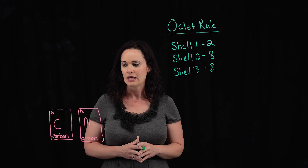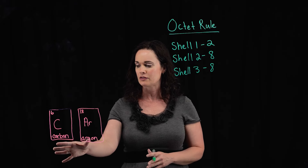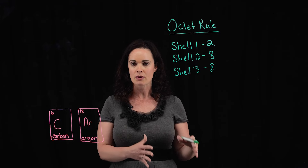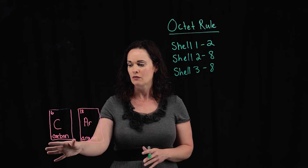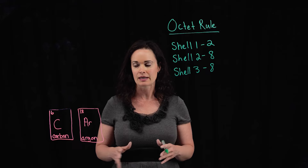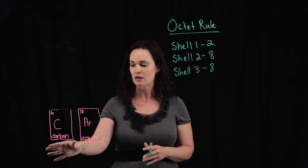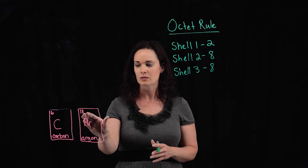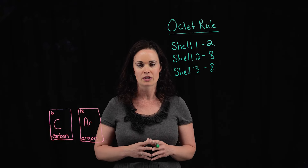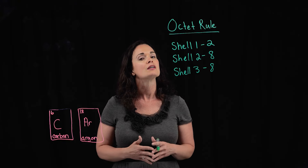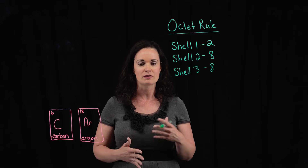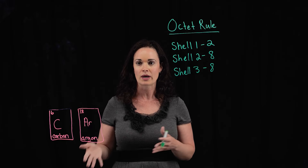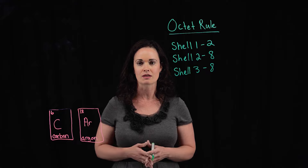Go ahead and pause the video. I want you to see if you can draw Bohr models and properly assign electrons for a couple of different atoms: first, carbon, which has an atomic number of six, and then argon, which has an atomic number of 18. Take a whirl at that and see if you can use the octet rule to understand where these electrons go in the orbital shells.